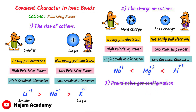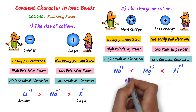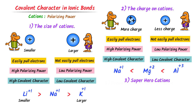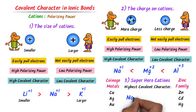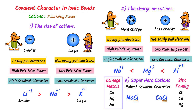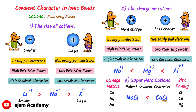The third factor involves superhero cations — the coinage metals and the zinc family. These superhero cations have the highest covalent character in the periodic table. Whenever you spot these superhero cations, they always have the highest covalent character. For example, comparing copper chloride and sodium chloride: the anion is the same (chlorine), but copper is a superhero cation, so copper ion has more covalent character than sodium. Therefore, copper chloride has more covalent character than sodium chloride.